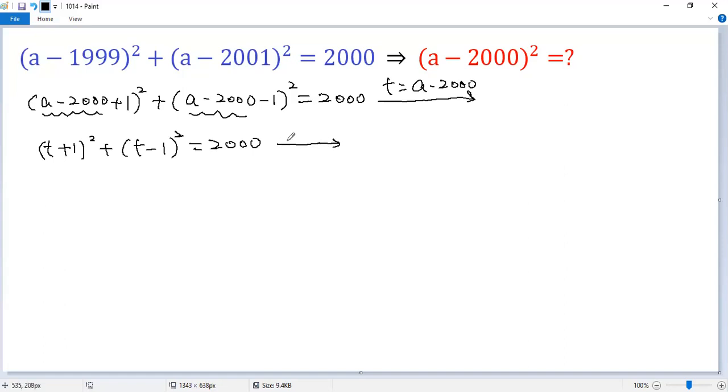Next, we can expand the left side using perfect square formula. So we get t squared plus 2t plus 1. The second term, t squared minus 2t plus 1 equals 2000.